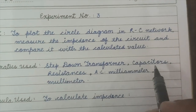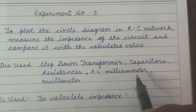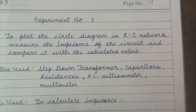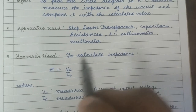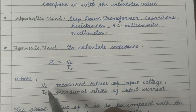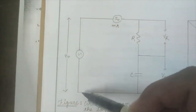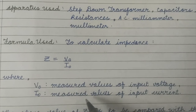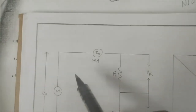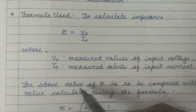The impedance is calculated as Z = V₀ / I₀, where V₀ is the measured value of the input voltage (also written as E₀) and I₀ is the measured value of the input current. We will measure V₀ from the voltmeter and I₀ from the milliammeter to find Z.